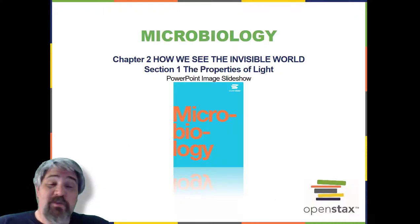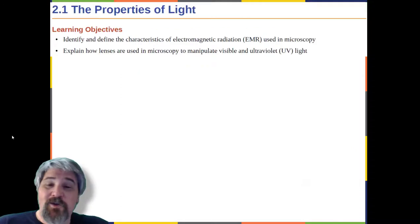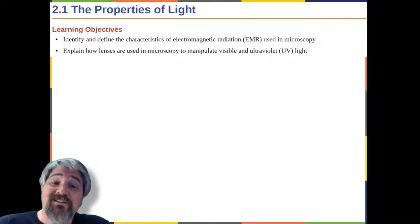So, section one, the properties of light, learning objectives: identify and define the characteristics of electromagnetic radiation used in microscopy; explain how lenses are used in microscopy to manipulate visible and ultraviolet light.